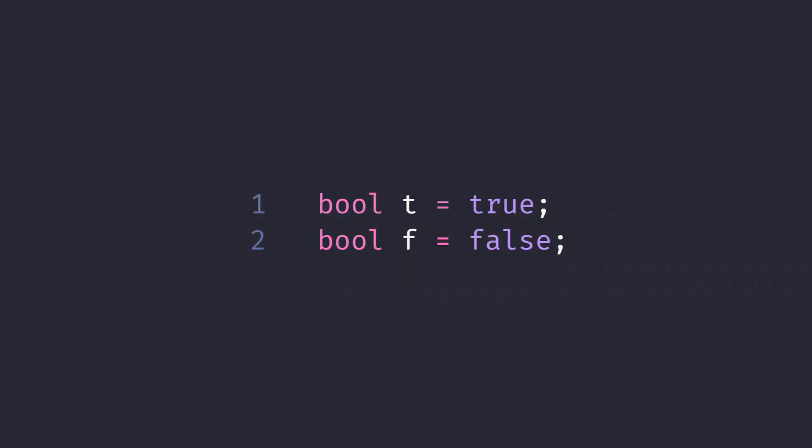Bool. A boolean variable stores one of two states: true or false. Nothing too weird about bools, but the size of a bool is left up to the implementation.